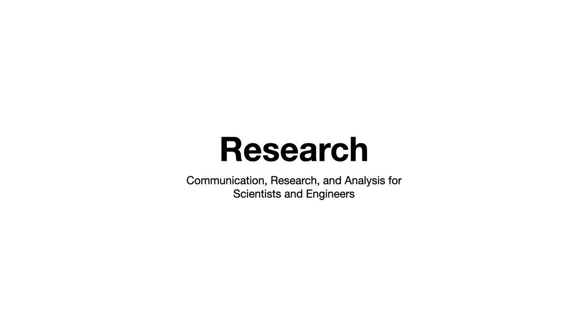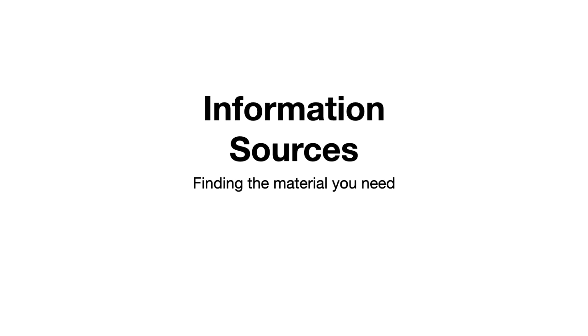This is the second lesson in our series about research in our course on Communication, Research and Analysis for Scientists and Engineers. Now that you know how you are going to collect and organize the information you need for your research, you're ready to start doing the hard work of actually finding that information. We'll talk more about a staged approach to doing this in the lesson on research process, but for now we're just going to focus on the different kinds of information that could help you.